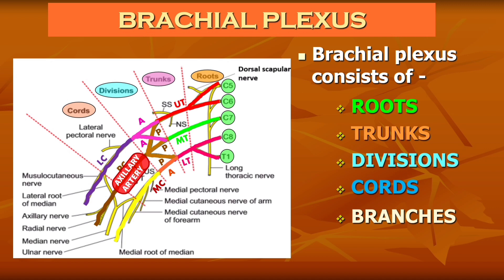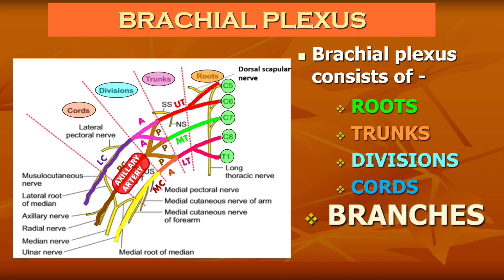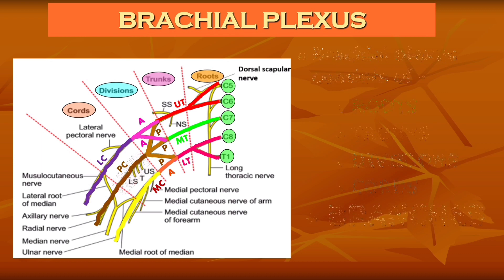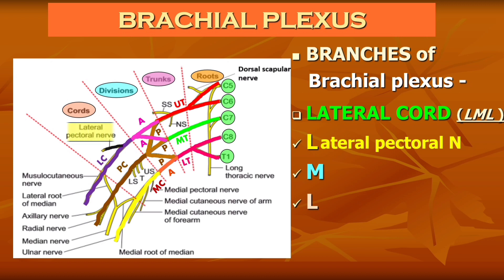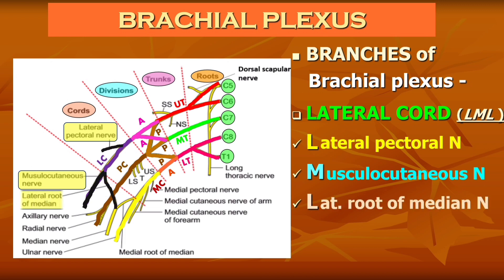Now coming to the branches of the brachial plexus — let's see the branches from the lateral cord. The mnemonic to remember the branches from the lateral cord is LML: L for lateral pectoral nerve, M for musculocutaneous nerve, and L for lateral root of median nerve.